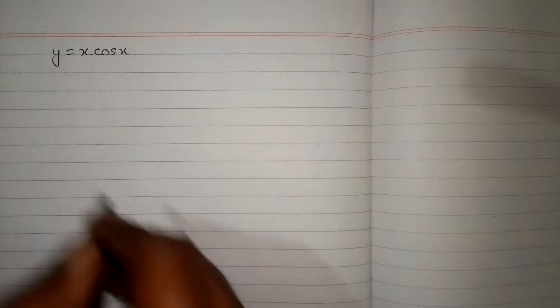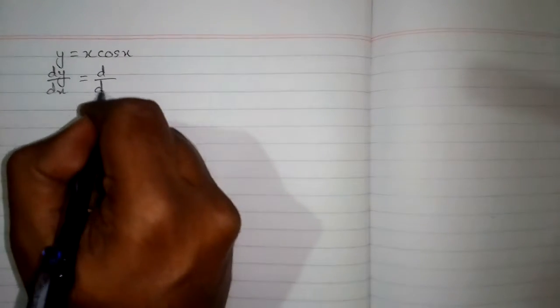In this video we will find the derivative of the function y equals x times cos x. So we will take the derivative of both sides with respect to x. So we have dy by dx is equal to d/dx of x times cos x.